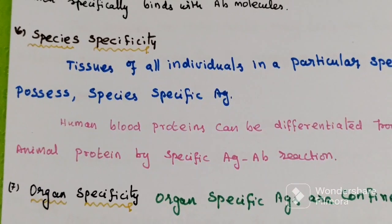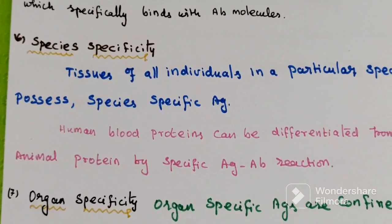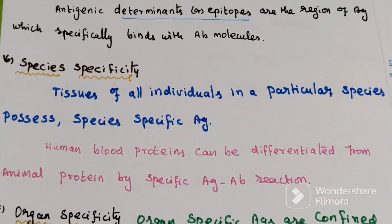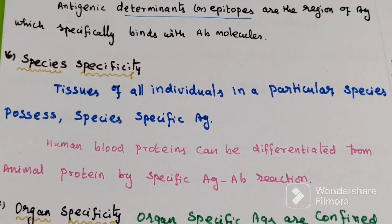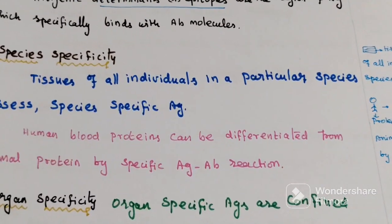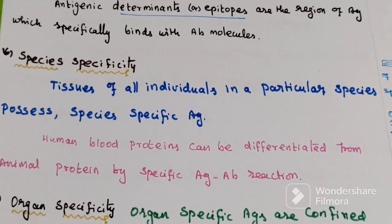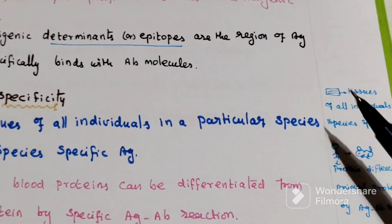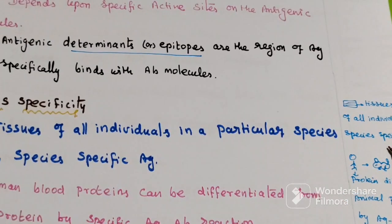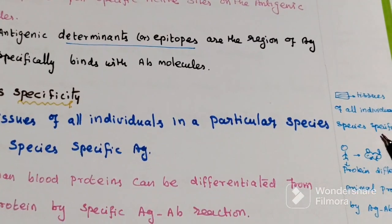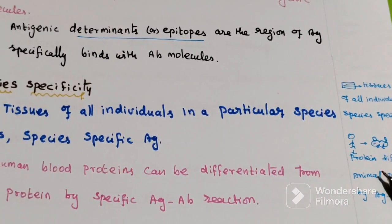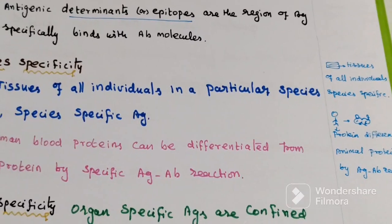The sixth factor is species specificity. Tissues of all individuals in a particular species have species-specific antigens. Human blood protein can be differentiated from animal protein by specific antigen-antibody reactions. So tissues of all individuals have specific antigens, and human blood protein is differentiated from animal protein by specific antigen-antibody reactions.